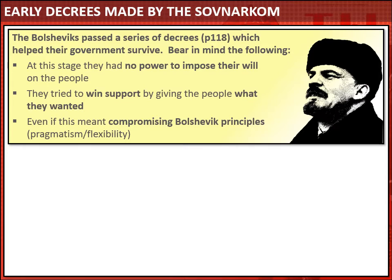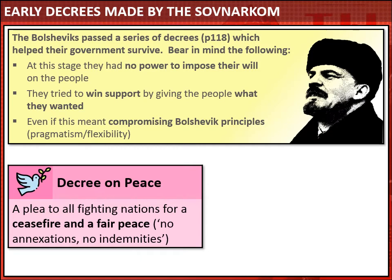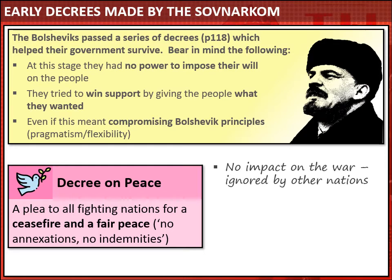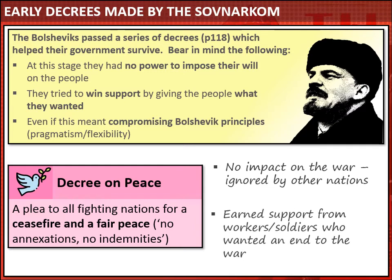One of the first decrees passed by the Sovnakom was the Decree on Peace — a plea to all countries involved in World War I for a ceasefire and a fair peace, or as they put it, a peace with no annexations and no indemnities. The other fighting nations ignored it and carried on regardless, and the Germans continued to attack Russia. But this decree did earn the Bolsheviks support from workers and soldiers who were keen to see an end to the war as soon as possible.